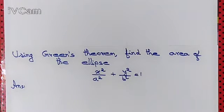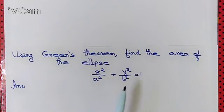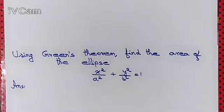We apply Green's Theorem to find the area of the ellipse x squared over a squared plus y squared over b squared equal to 1.